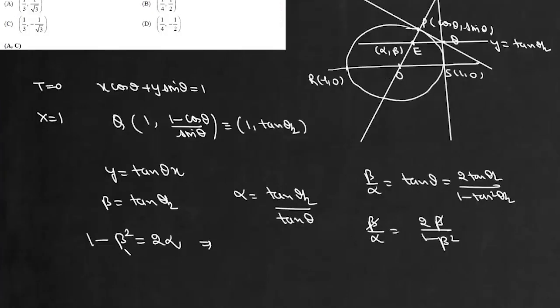We will replace β with y and α with x. Then we can write y² = 1 - 2x which is a parabola. So locus of this point E is this parabola y² = 1 - 2x.